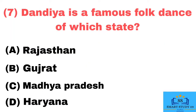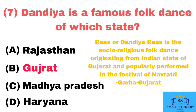Q7. Dandiya is a famous folk dance of which state? Answer: Gujarat. Rasa Dandiya Ras is the socio-religious folk dance originating from the Indian state of Gujarat and is popularly performed during the festival of Navratri.